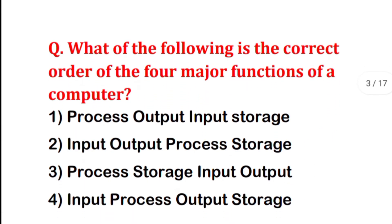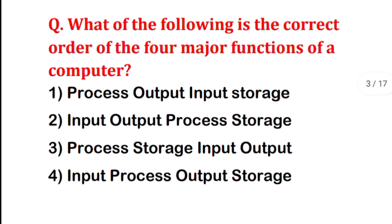What is the correct order of the four major functions of the computer? The options are: Option 1 — Process, Output, Input, Storage. Option 2 — Input, Output, Process, Storage. Option 3 — Process, Storage, Input, Output. Option 4 — Input, Process, Output, Storage.